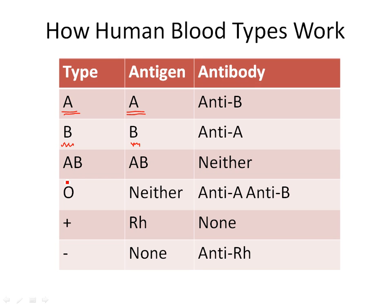If you are blood type AB, you have both antigen A and antigen B on the surface of your cells. If you're blood type O, you have neither antigen on your cells — there's no A, there's no B.